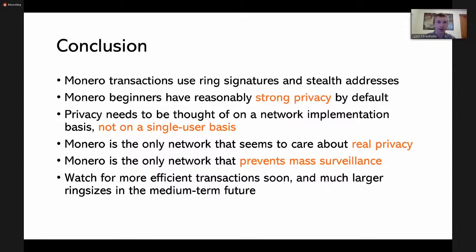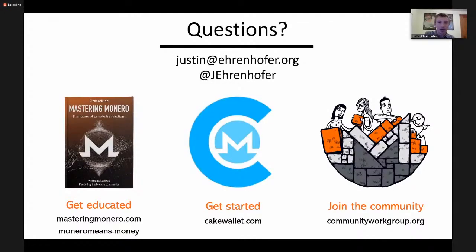The only other system like Grin that provides any protection for everyone hides the amount but provides really weak graph protection. With Monero, watch for more efficient transactions soon and hopefully much larger ring sizes in the medium-term. Take enthusiasm about privacy coins and be the person constantly advocating for Bitcoin to adopt protocol changes. If it doesn't have at minimum confidential amount-hiding, CoinJoin and Wasabi will all have severe limitations if you can't even hide the amount — even building on top of second-layer solutions.